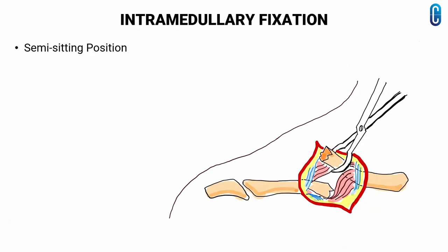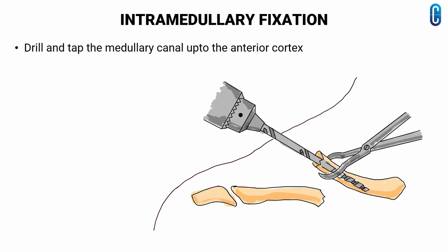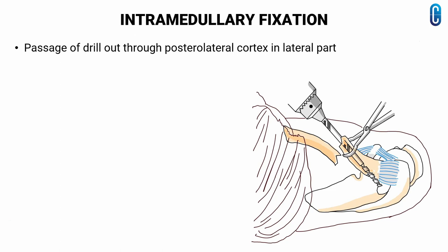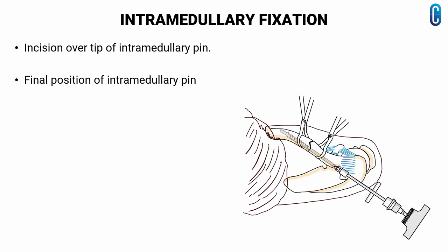We will now see how intramedullary fixation with a headed distally-threaded pin — the Rockwood clavicle pin — is done for clavicle fractures. Place the patient in a semi-sitting position on a radiolucent table with an image intensifier on the ipsilateral side. Elevate the medial clavicle through the incision, then drill and tap the medullary canal up to the anterior cortex. Elevate the lateral fragment through the incision, drill and tap the medullary canal, and pass the drill through the posterolateral cortex. An incision is placed over the tip of the intramedullary pin. Next, pass the Rockwood clavicle pin from the lateral end to get reduction and fixation. Here you can see the final position of the intramedullary pin.